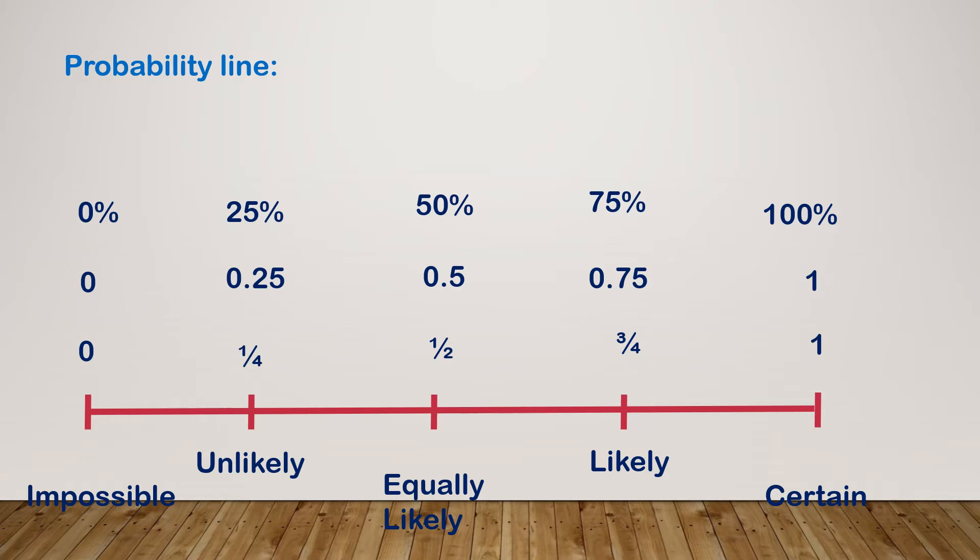So it would be impossible for you to roll a six-sided dice and get an eight. It would be certain that you would roll a six-sided dice and get a whole number. So in between we've got several different things: we've got unlikely, even chance, and likely.